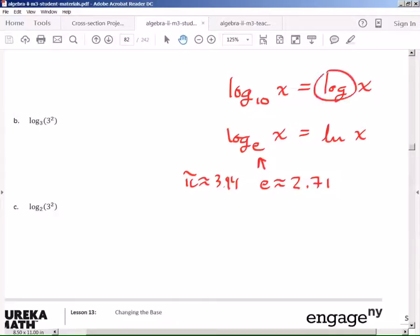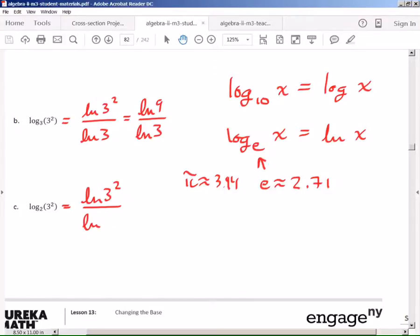Natural log of x behaves just like log. But the neat thing about natural log is that you can also do the change of base ratio with it. So instead of using log, you can say natural log of 3 to the second power divided by natural log of 3. So you would get natural log of 9 on top divided by natural log of 3. And this one right here would be natural log of 3 to the second power divided by natural log of 2.